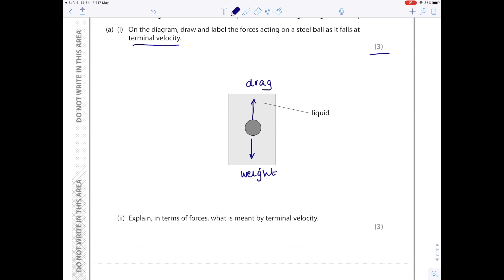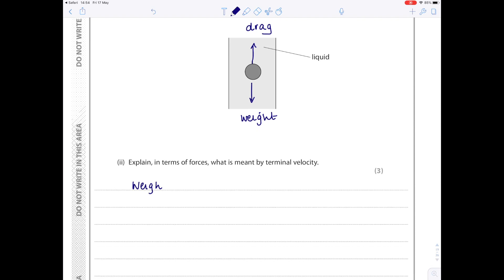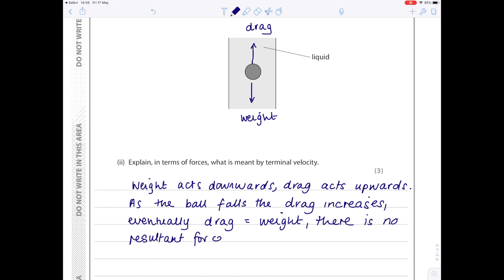Don't miss these questions. Look, it's worth three marks, so make sure you answer the question and don't just skip on. Explain in terms of forces what is meant by terminal velocity. So I'm going to use this as an excuse to write a full answer for terminal velocity, not just the three marks but a five marker. You want to start by stating which direction the forces are acting in. So weight acts downwards, drag acts upwards. As the ball falls, the drag increases. Eventually, and this is the important bit for answering this question, drag equals weight. There is no resultant force and no acceleration. So the ball travels at constant speed.